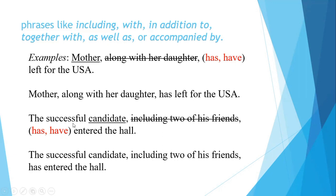Another sentence: 'The successful candidate, including two of his friends, has or have entered the hall.' You should not feel confused by 'including two of his friends.' It may look like 'friends' is plural and there should be 'have,' but that is not so. The correct sentence is: 'The successful candidate, including two of his friends, has entered the hall.' The successful candidate is the subject and it is singular, therefore we use 'has.'